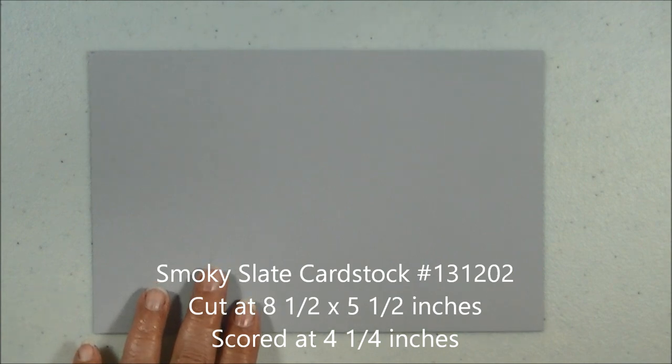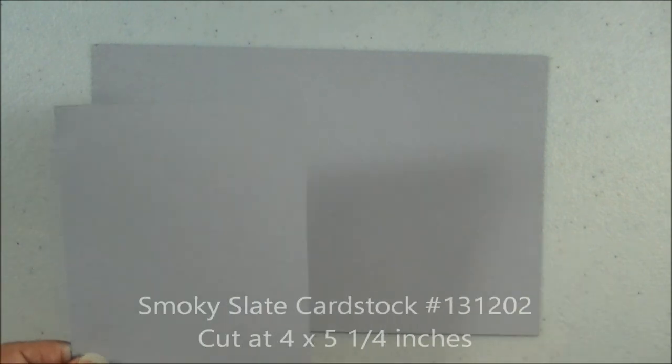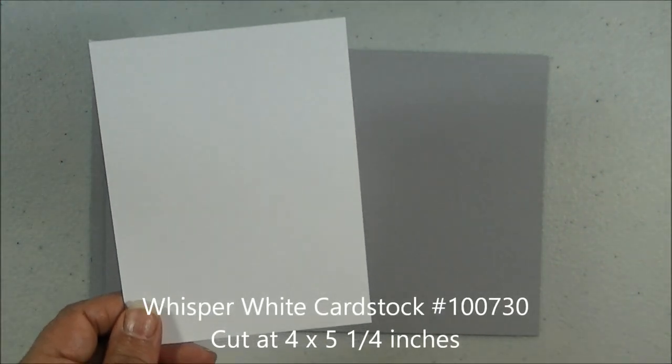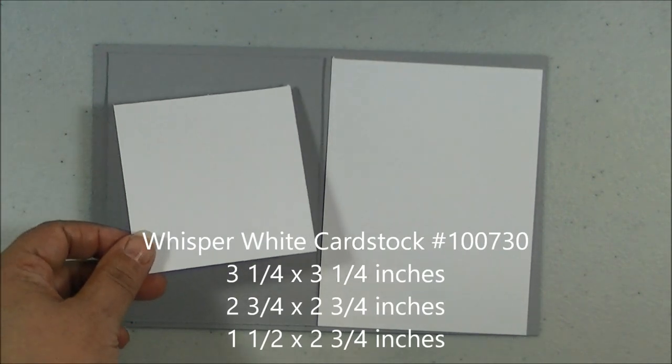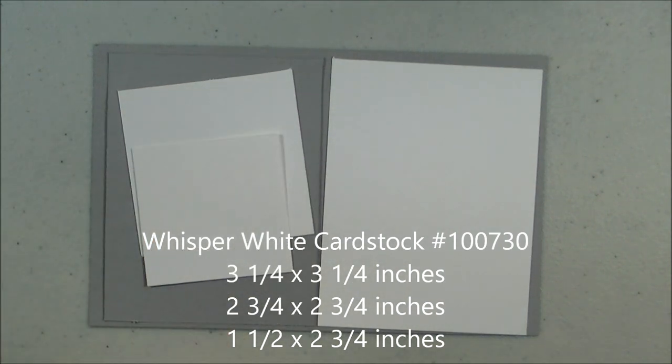That is cut at 5 1/2 by 8 1/2 and we'll be folding that at 4 1/4. Another piece of the Smokey Slate cut at 4 by 5 1/4. I have a piece of the Whisper White also cut at 4 by 5 1/4. Then I have some scrap pieces of Whisper White here.